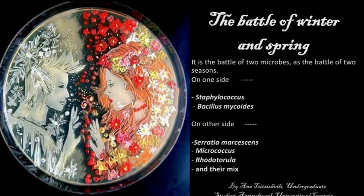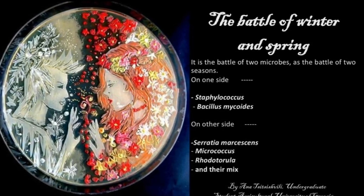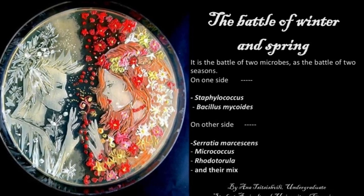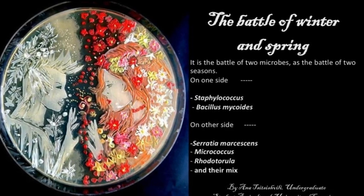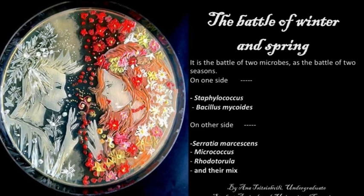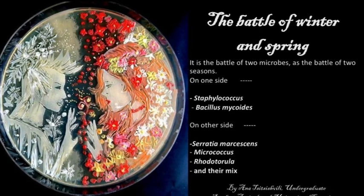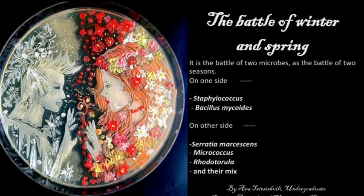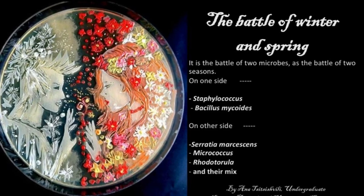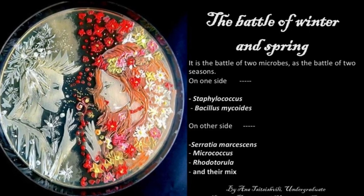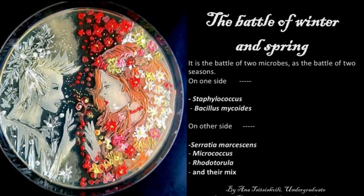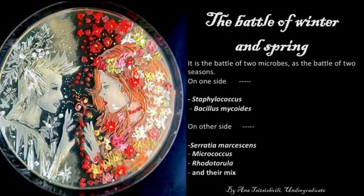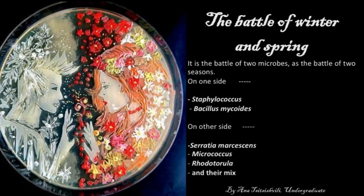Antibiotics produced by Serratia inhibit their growth. They melt, as worms of the spring melted the snow. On the other side of the plate, spring wins. Flowers of resistant Micrococcus and their mix are growing so fast. As after winter, always comes the spring and nature awakes.